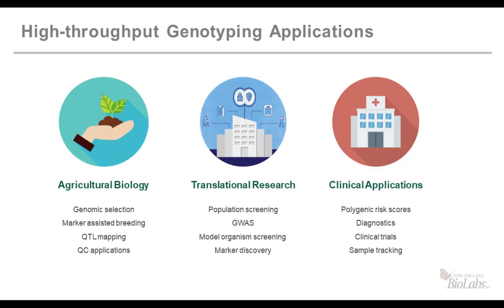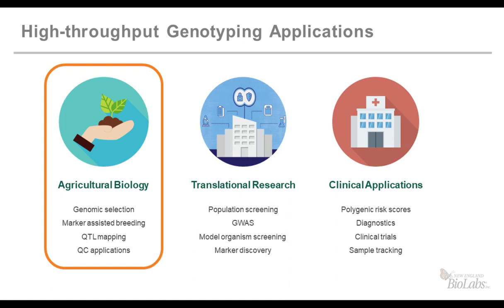When we look generally at genotyping applications, this can span a huge variety of areas — from agricultural biology, where you're thinking about genotyping, genomic selection, marker-assisted breeding, QTL mapping, or QC applications — all the way to translational research, where you can envision population screenings, GWAS, model organism screening, and marker discovery — down to clinical applications such as polygenic risk scores, diagnostics, clinical trials, or sample tracking. At this point, the NEBnext Direct Genotyping Solution is developed for agricultural and animal applications, assisting breeding and livestock applications.